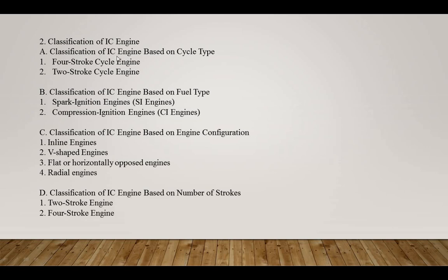The classification of engine based on cycle type has two subtypes: four-stroke cycle engine and two-stroke cycle engine. IC engines are classified based on the type of cycles they follow. There are two main types of cycles: the Otto cycle and diesel cycle. Engines that follow the Otto cycle are called petrol engines, while those that follow the diesel cycle are called diesel engines.